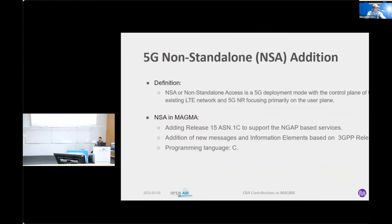In the final quarter of the previous year, we worked on the 5G non-standalone addition. NSA is a 5G deployment mode with the control plane of the existing LTE network, while 5G NR focuses mainly on the user plane. The addition of NSA in MAGMA started with the upgrade and addition of the release 15 based ASN.1C, which was added to cater to the needs of NGAP-based services. Moreover, we added extra messages and new information elements based on 3GPP release 15.